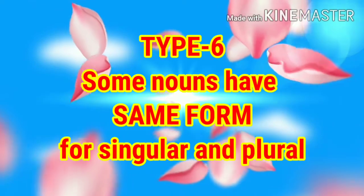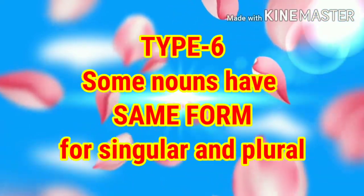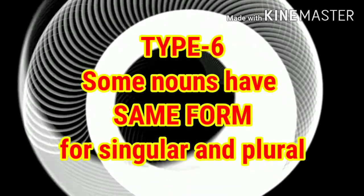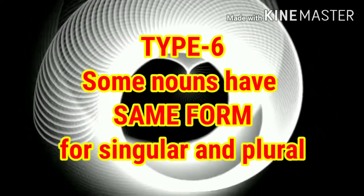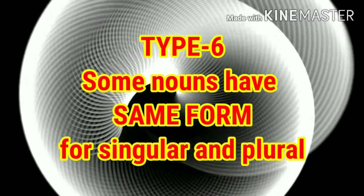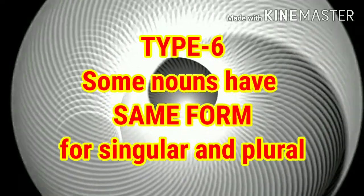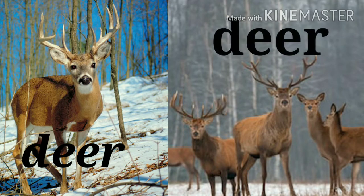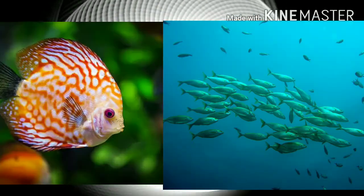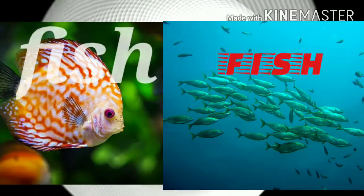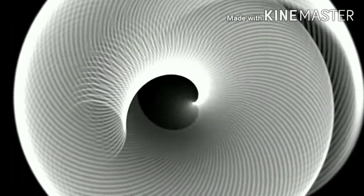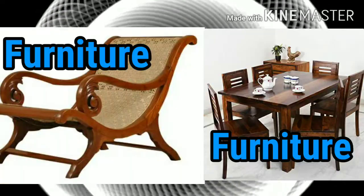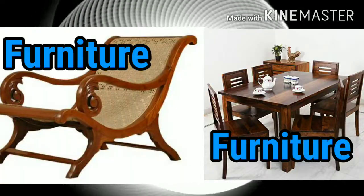Now Type 6: some nouns have the same form for both singular and plural. For example: deer, fish, hair, furniture, and luggage remain the same whether singular or plural.